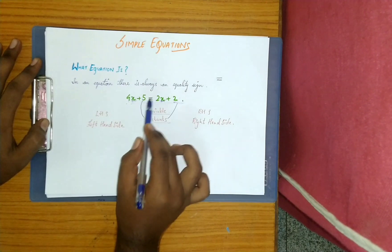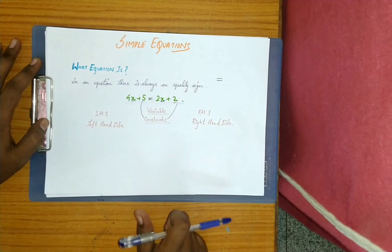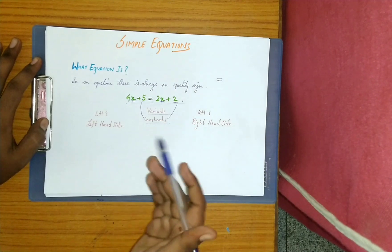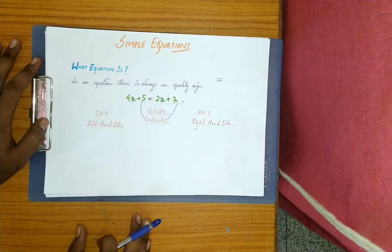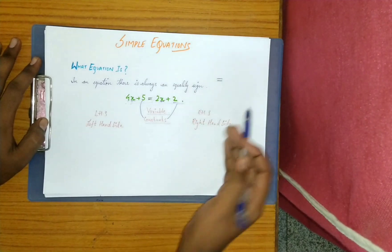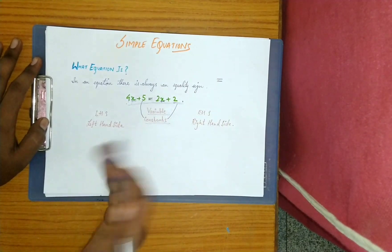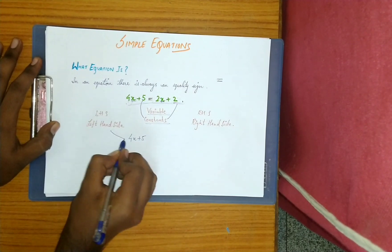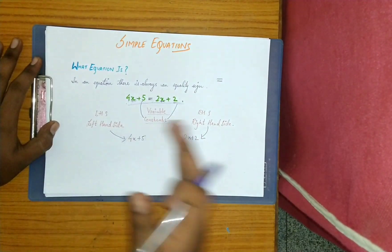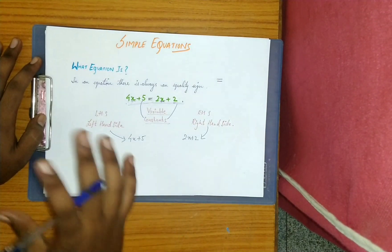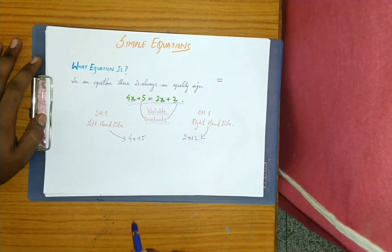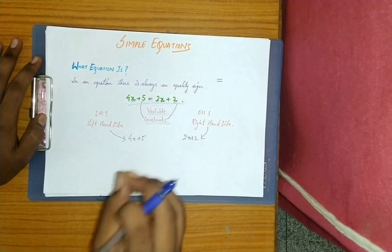One more thing to remember is that to the left of the equality sign is the Left Hand Side, or LHS, and to the right is the Right Hand Side, or RHS. In the equation 4x + 5 = 2x + 2, the LHS is 4x + 5 and the RHS is 2x + 2. So an equation is a combination of variables, constants, and an equality sign, along with LHS and RHS — remember all of these things.